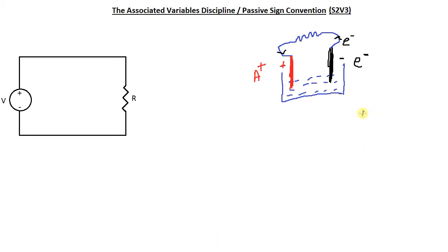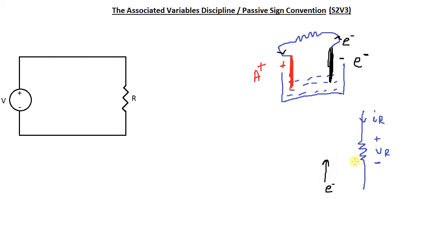Now let's concentrate only on the resistor. Suppose we have a current I going through it — we normally assign a sign in a particular direction. We just saw that electrons move from lower to higher potential. If the current is in this direction, the electrons move in the opposite direction. For that electron to move this way, the potential here must be lower compared to the potential on the other side.